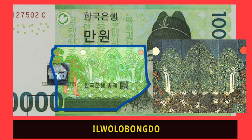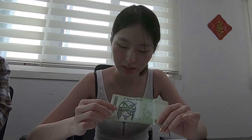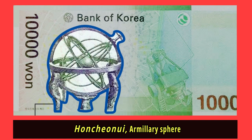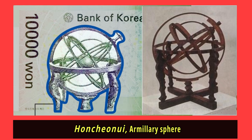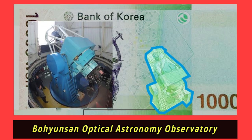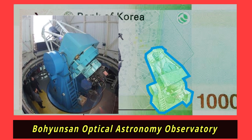The painting features five mountain peaks and is usually found where kings stayed — if you look in other videos, you can see this picture behind the king's throne. On the other side, there is a sphere called the Honcheon-yi, an astronomical instrument created during King Sejong's rule. Beside it is a picture of a telescope at the Bohyunsan Observatory, apparently the largest reflective telescope in Korea.